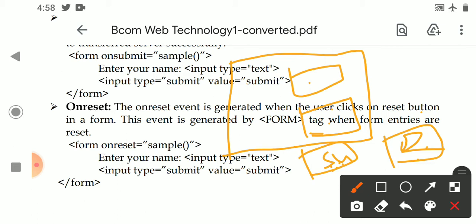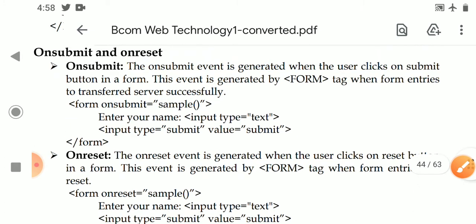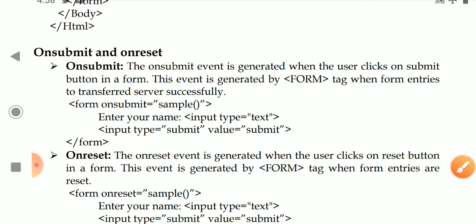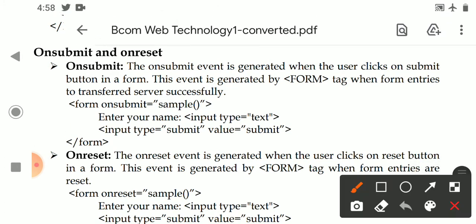The onsubmit and onreset events are generated when the user clicks on these two buttons. First we'll see onsubmit. The onsubmit event is generated when the user clicks on a submit button in a form.